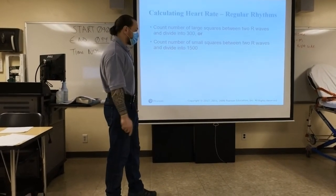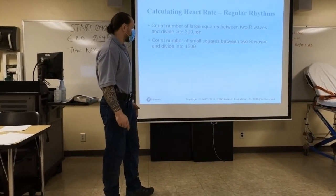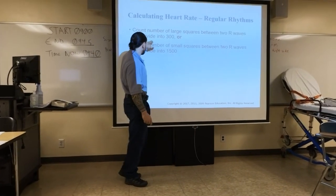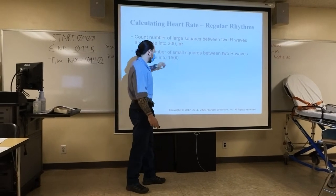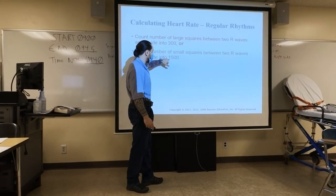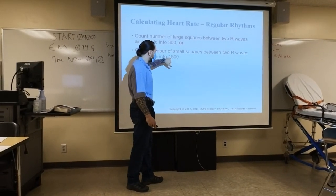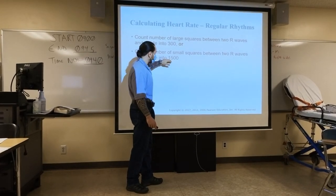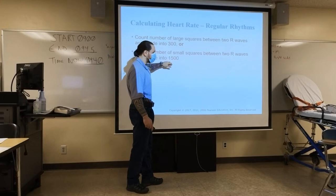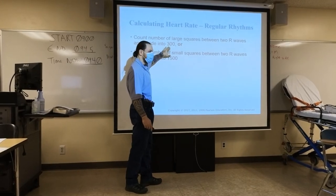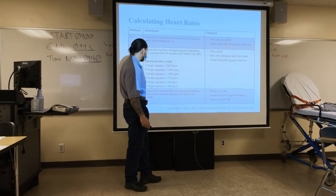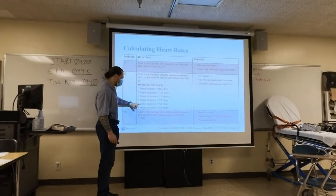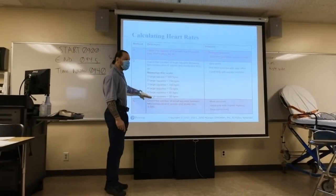Let's do the calculation of heart rate. One method: count the number of big boxes starting from 300, 150, 100. The other method is count the small boxes and divide by 1,500 — this is the most accurate method. You'd need to be really good at math or use a calculator. The box method numbers to commit to memory are: 300, 150, 100, 75, 60, 50.